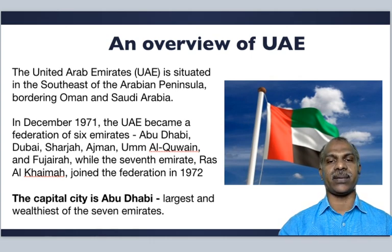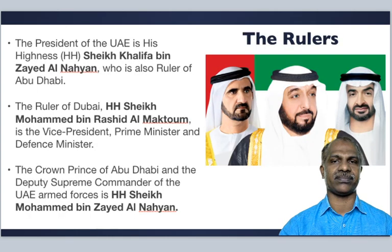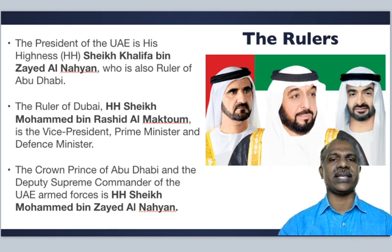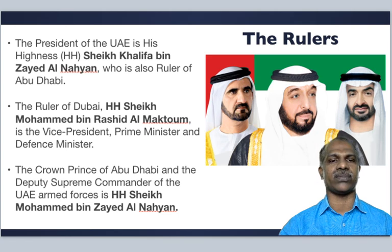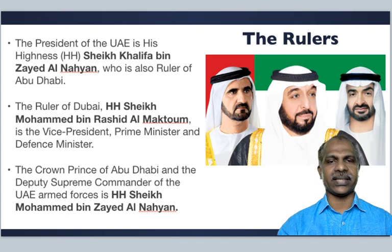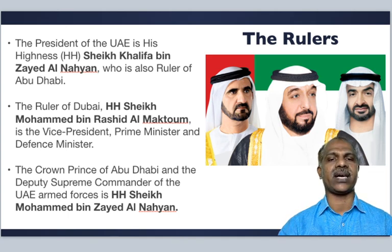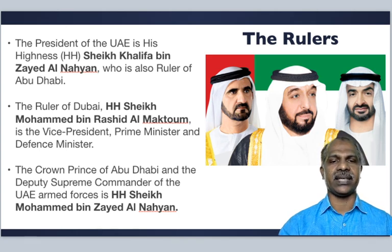The capital city is Abu Dhabi, the largest and wealthiest of the seven Emirates. The President of UAE is His Highness Sheikh Khalifa bin Said al-Nahiyan, ruler of Abu Dhabi. The ruler of Dubai, His Highness Sheikh Mohammed bin Rashid al-Maktoum, is the Vice President, Prime Minister, and Defence Minister. The Crown Prince of Abu Dhabi and Deputy Supreme Commander of the UAE Armed Forces is His Highness Sheikh Mohammed bin Said al-Nahiyan.